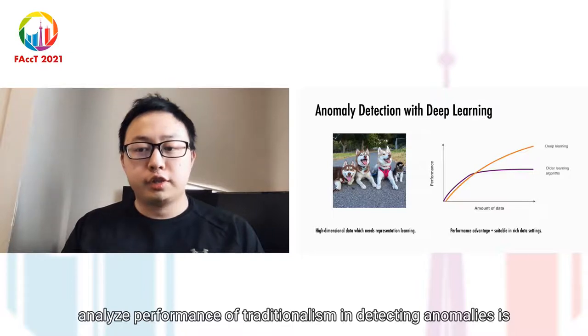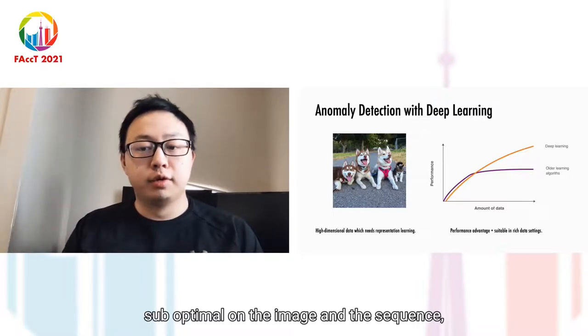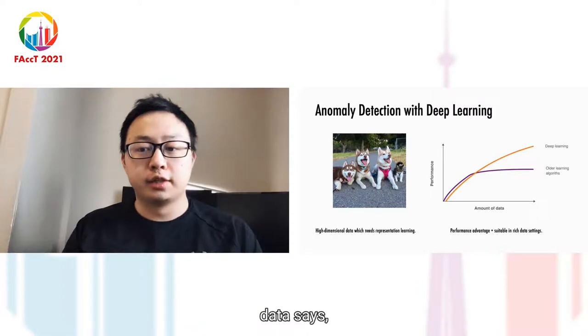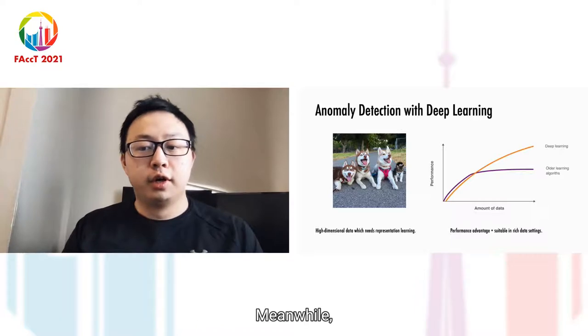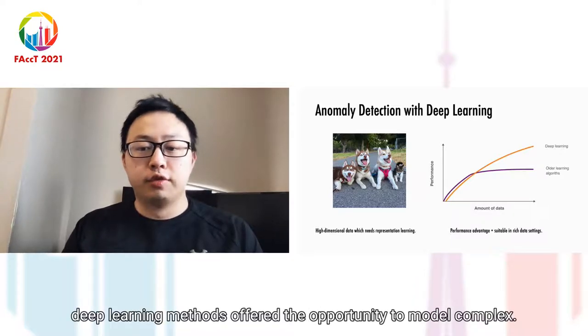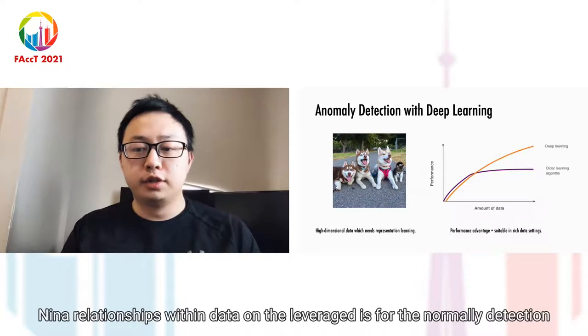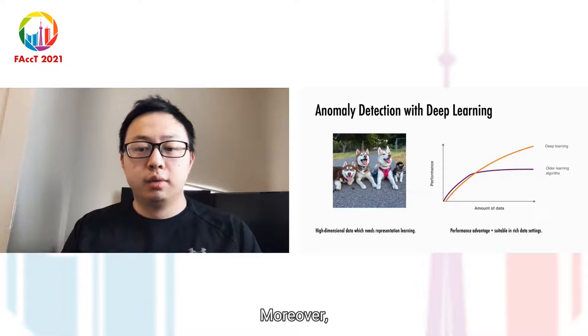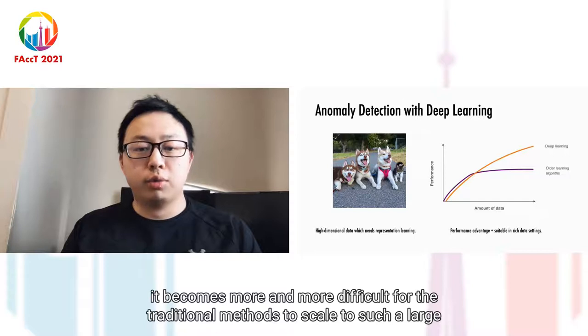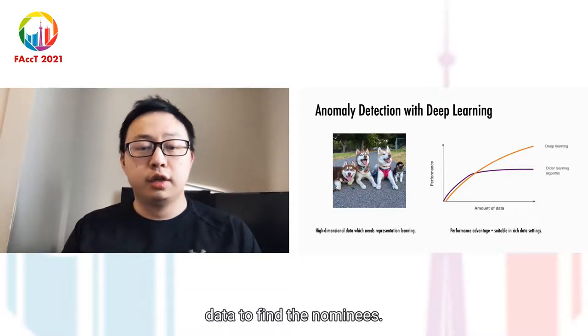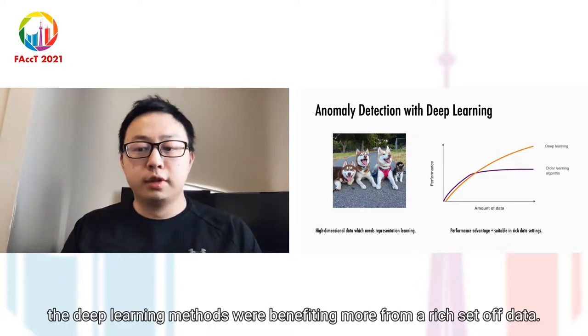Performance of traditional algorithms in detecting anomalies is suboptimal on image and sequence datasets, since it fails to capture complex structures in the data. Meanwhile, deep learning methods offer the opportunity to model complex nonlinear relationships within data and leverage this for anomaly detection. Moreover, as the volume of data increases, deep learning methods benefit more from a rich set of data.